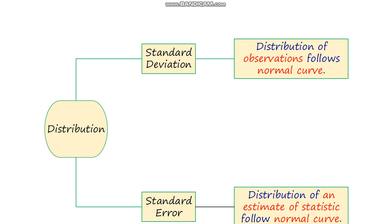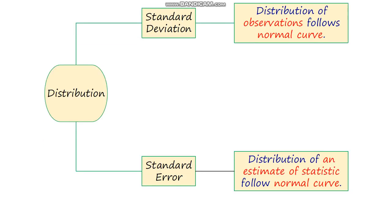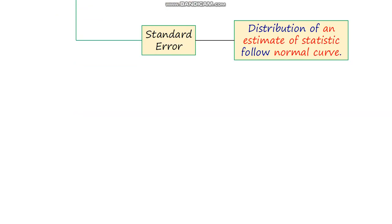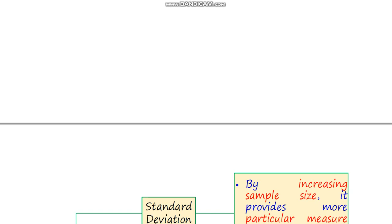Regarding distribution: for standard deviation, the distribution of observations follows a normal curve. For standard error, the distribution of the statistic under consideration also follows a normal curve.